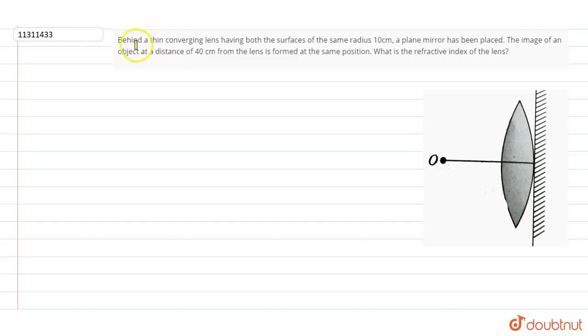The question asked: Behind a thin converging lens having both surfaces of the same radius, that is 10 cm, a plane mirror has been placed. The image of the object at a distance of 40 cm from the lens is formed at the same position. What is the refractive index of the lens?